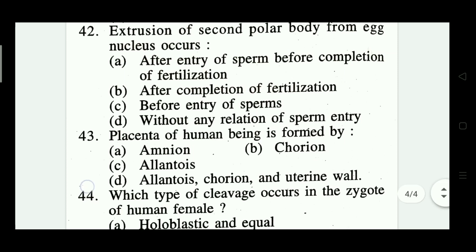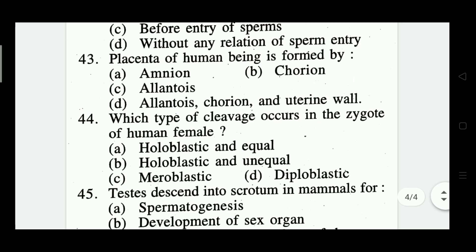Question number forty-three: placenta of human being is formed by — amnion, chorion, allantois, chorion and uterine walls. Which one is right? Option B — chorion.